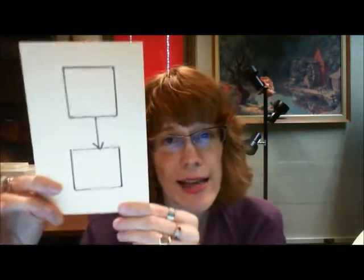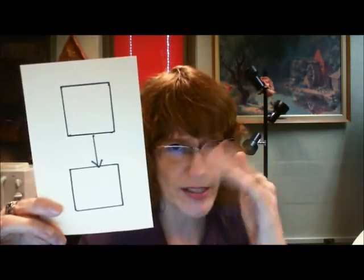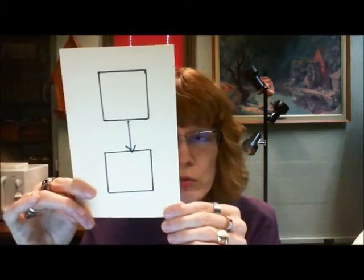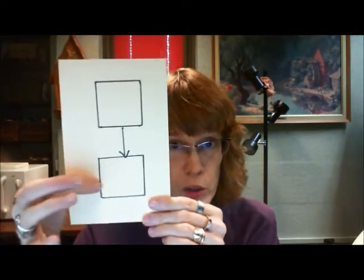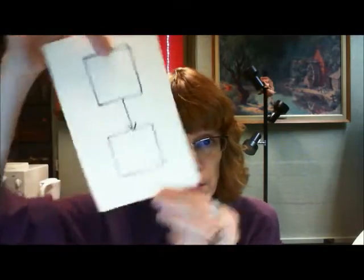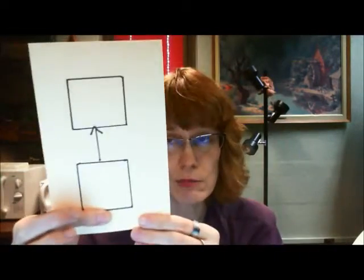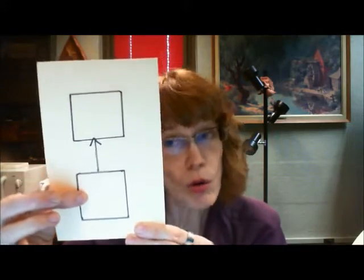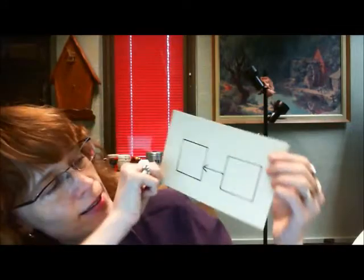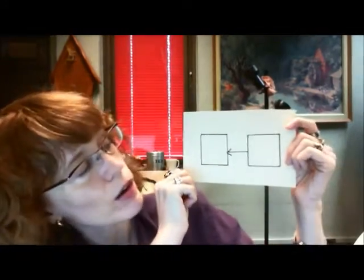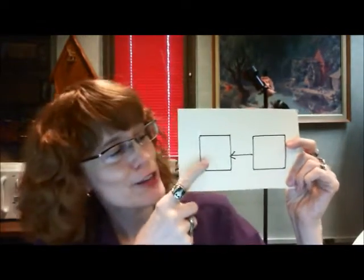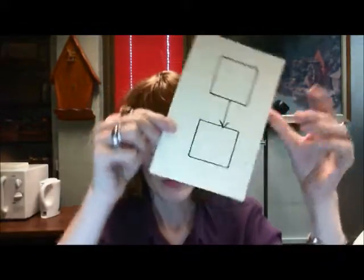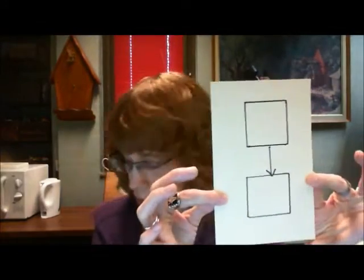I said last time that the orientation of this diagram doesn't make any difference, and it really doesn't. I tend to use this orientation with the conclusion on the bottom and the reason on the top. Many people do it with the conclusion on the top and the reason on the bottom. Or you can also do it like this, where you have the conclusion over here and the reasons over here.